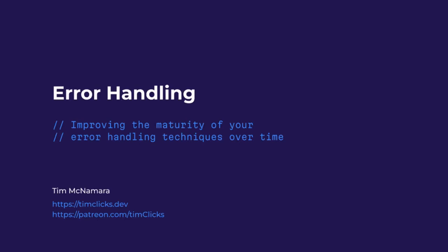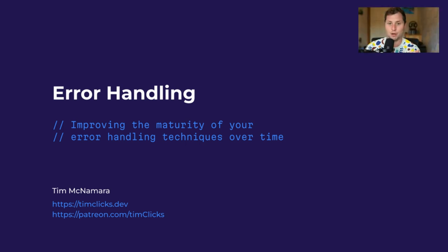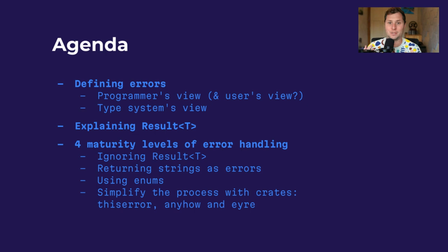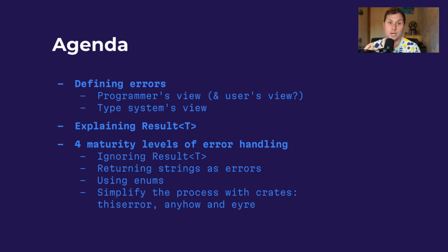Let's chat about error handling, and in particular how to improve the maturity of your error handling techniques over time as you work with the Rust programming language. My name is Tim, and here's the agenda for our session. First, we're going to define what an error actually means both from your view as a programmer and from the type system's view. We'll talk about the Result type and how it wraps some other type T, and then progress through multiple maturity levels for defining errors in a reusable way.